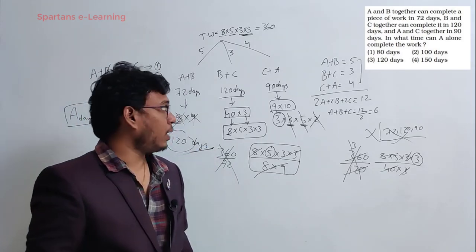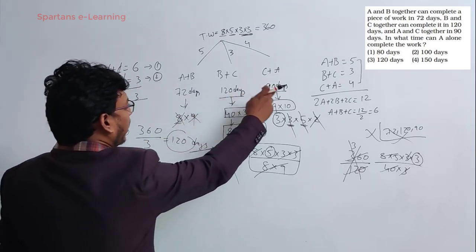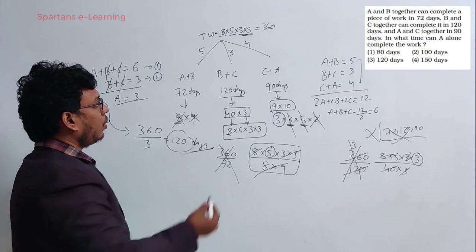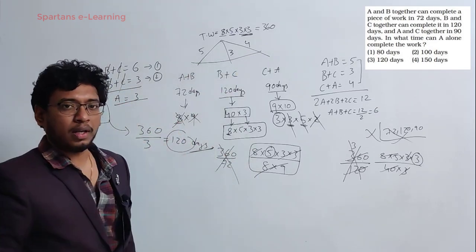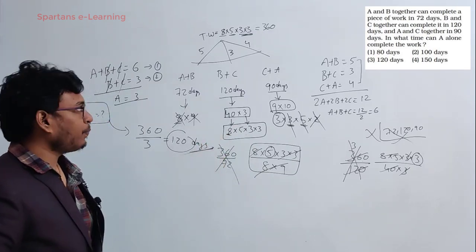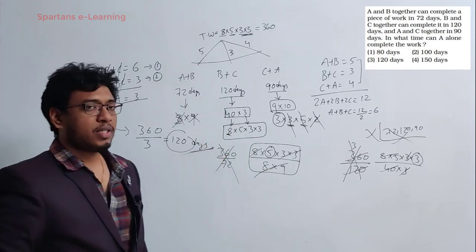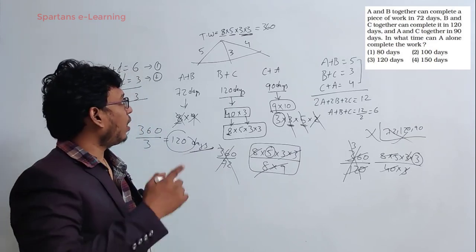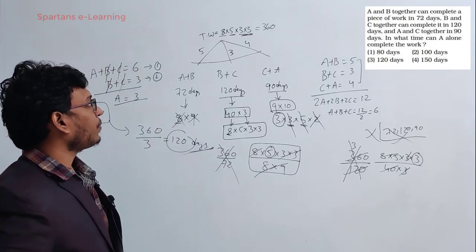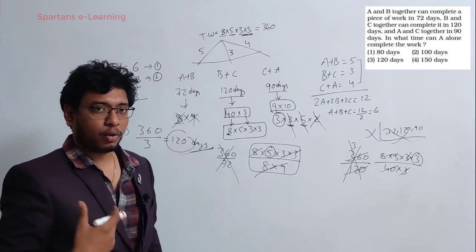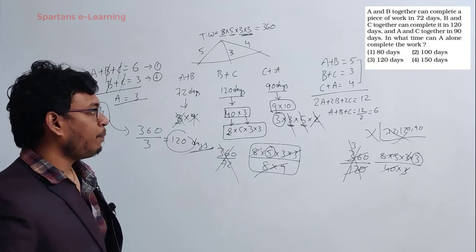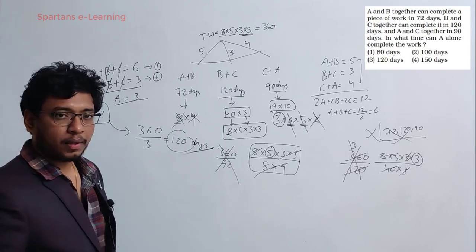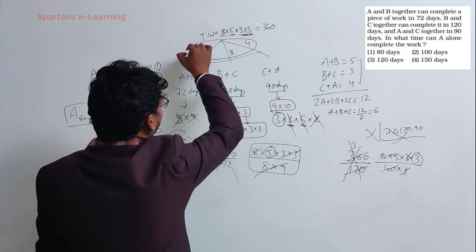Even this question can be solved mostly orally. Once you calculate the LCM step, the rest is oral: A+B+C efficiency = 12÷2 = 6; B+C = 3; so A = 6 − 3 = 3. Total days for A = 360 ÷ 3 = 120 days. The key skills are learning how to calculate LCM easily and how to find efficiencies quickly.